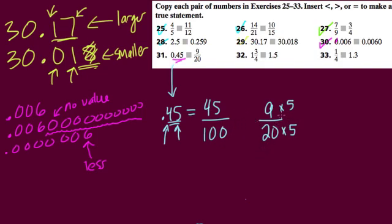So let's rescale that. 9 twentieths, multiply the numerator and denominator by 5, effectively not changing the fraction. And what do we get? Well, then we would get 45 over 100. So, in fact, this decimal and fraction are equal.